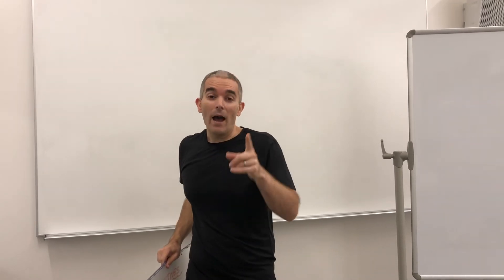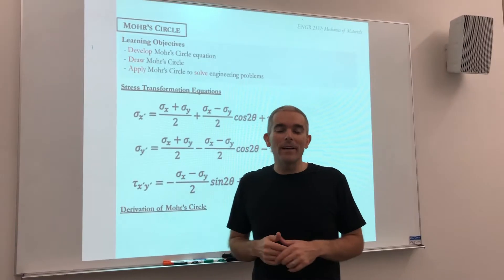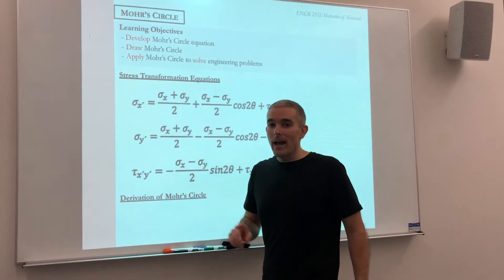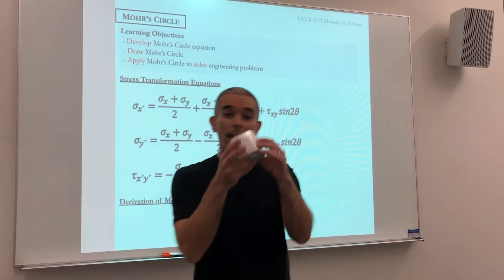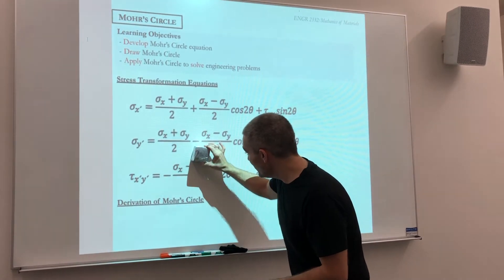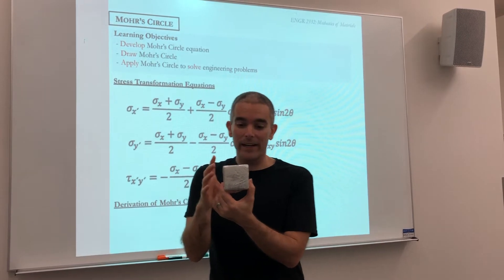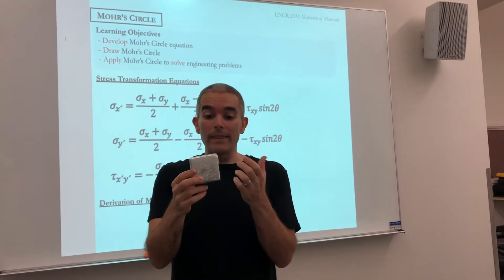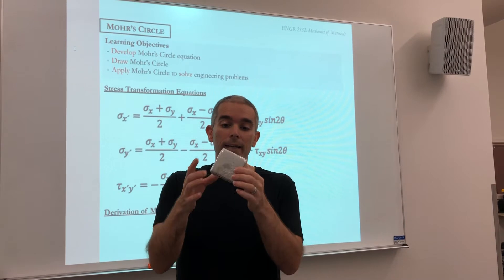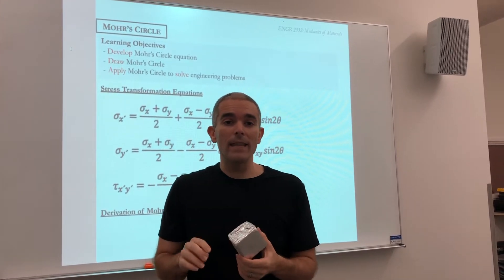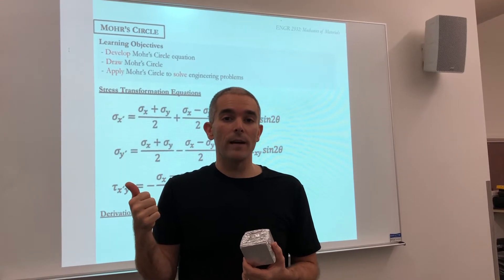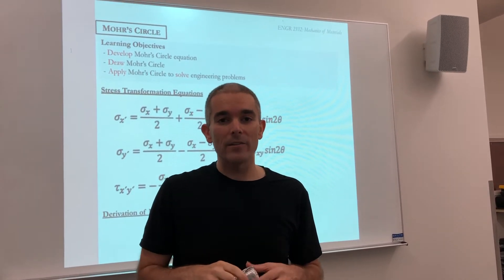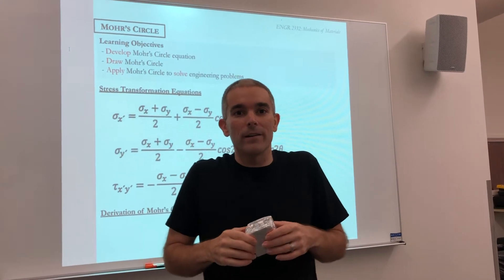Hope you're excited to find out what it's all about. In the last lesson, we talked about stress transformation equations. We were looking at an element — our friendly little block — we pull it out of an object, and we said that we have stresses acting on it. It's not good enough to know what stresses are acting in the X, Y, and Z directions, but we need to rotate this block to different orientations to find the maximum and minimum normal stresses, which we refer to as principal stresses, and also the max shear stress — because those values will ultimately help us determine if failure occurs.